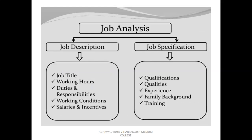For better understanding, I have mentioned here a chart showing what is job description and what is job specification. Job description means: the job title, working hours, duties and responsibilities the person has to do, working conditions — at what place and in what conditions the person has to perform duties — and salaries, grades, and incentives that the person is going to receive. If any analysis is able to answer all these questions, it is known as job description.